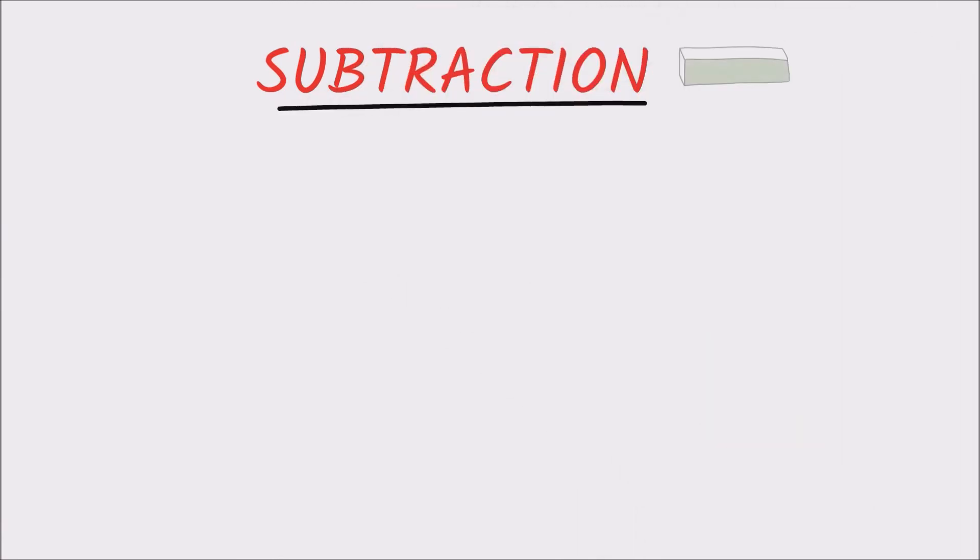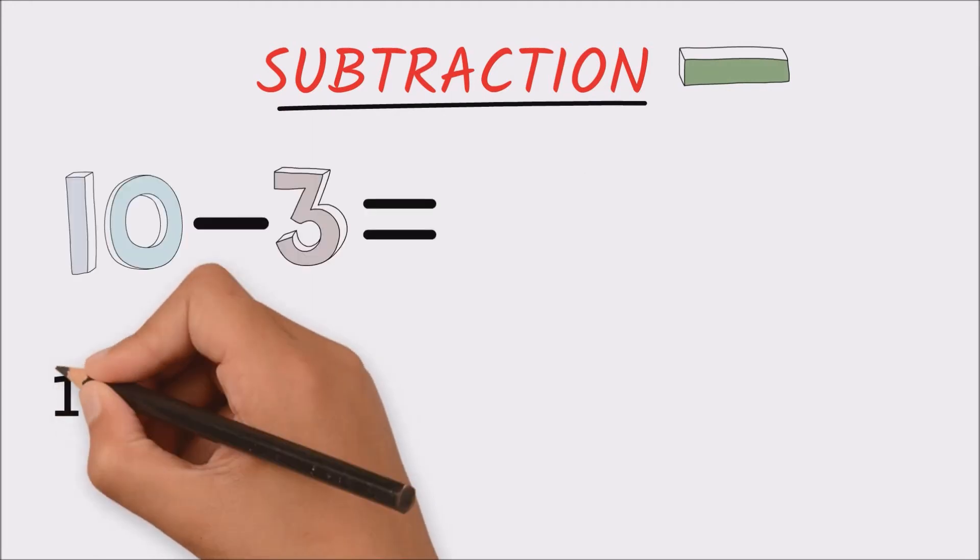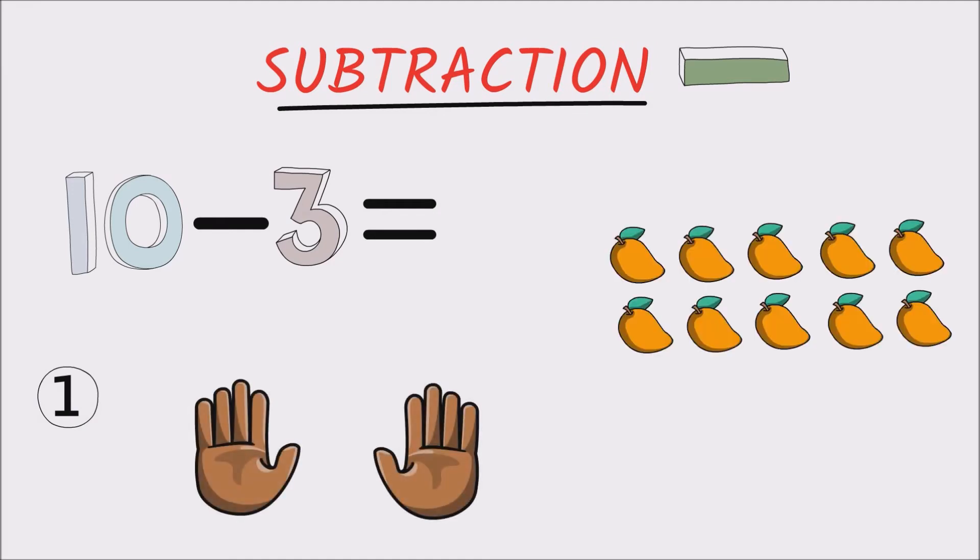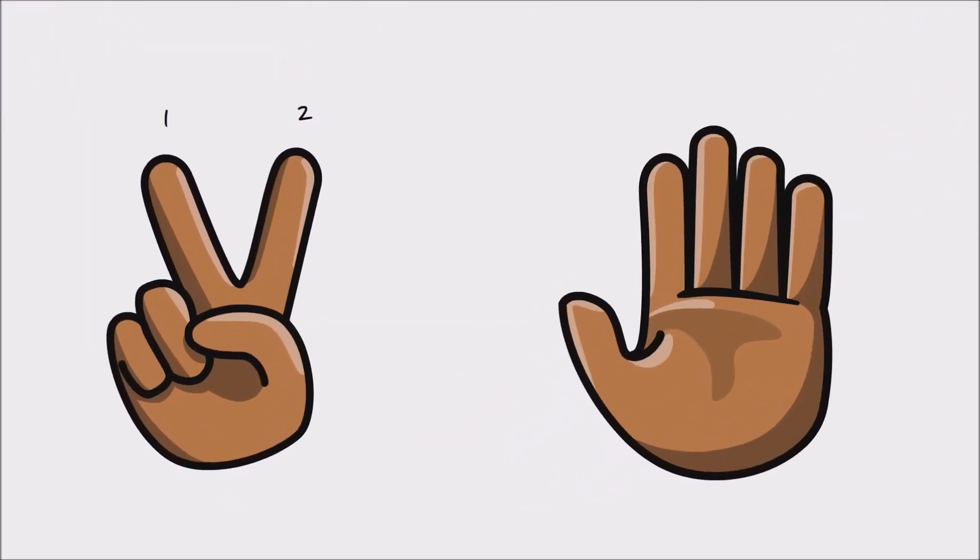Here are two methods we can use. Number one: by using our fingers, we start with the total number of mangoes that Shanice has, which is ten. Then we remove three fingers for the number of mangoes that she has to give to Davion. And then we count all the fingers that are left. So by counting it would be one, two, three, four, five, six, seven. So we get a result of seven.